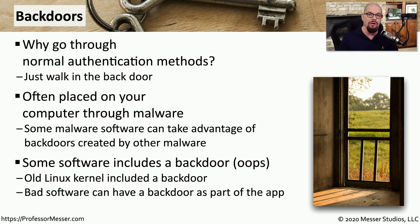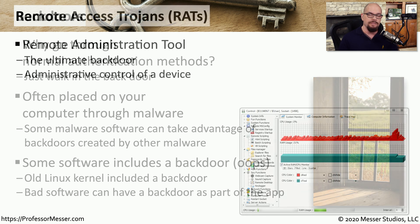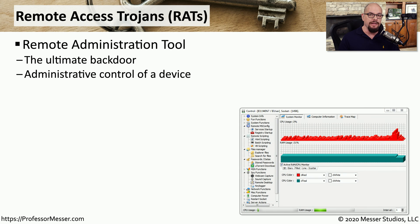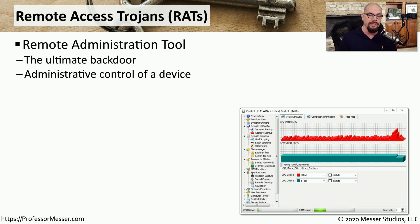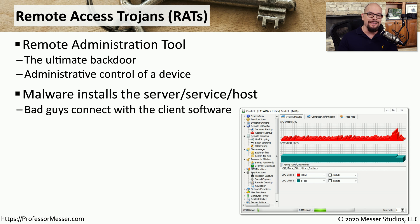A type of software that attackers might install as part of the backdoor is a remote access Trojan, or RAT. You might also hear this referred to as a remote administration tool. This is a remote access tool that gives a third party nearly complete control over the operating system. The malware that gets installed onto a computer might install this remote access Trojan.